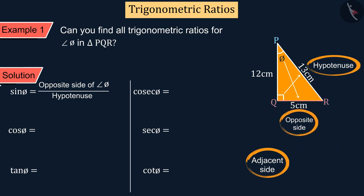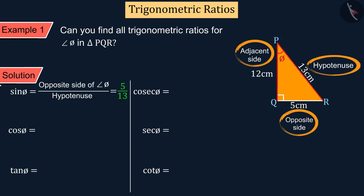And the remaining side PQ is the adjacent side. So by substituting the values of the opposite side and the hypotenuse, we get sin θ equals 5 upon 13.